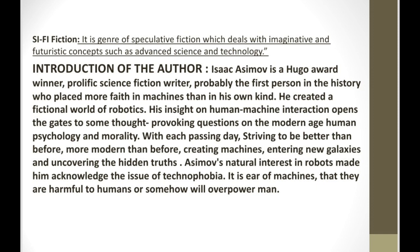So the first question is about Isaac Asimov and his narrative perspectives. Isaac Asimov is a Hugo Award winner - Hugo being a prestigious award - and he is a prolific science fiction writer. 'Prolific' means a writer who is far-sighted and gives different kinds of predictions. For example, if something doesn't exist in the present, he tells through his predictions that its possibility is feasible in the future. He was also the first person in history who relied very much on machines, even more than humankind, and he created a fictional world related to robots through the interaction of humans and machines.